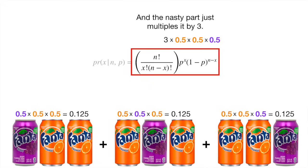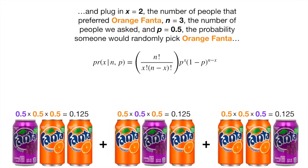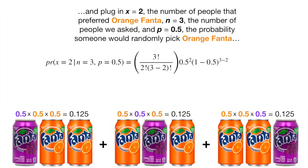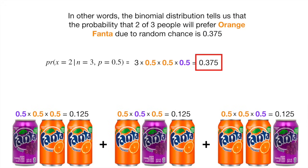These two parts of the equation correspond to 0.5 times 0.5 times 0.5, and the nasty part just multiplies it by 3. Now we can put all the parts together and plug in x equals 2, the number of people that preferred orange Fanta; n equals 3, the number of people we asked; and p equals 0.5, the probability someone would randomly pick orange Fanta. And we get the same probability we got when we did everything by hand: 0.375. The binomial distribution tells us that the probability that 2 of 3 people will prefer orange Fanta due to random chance is 0.375. BAM!